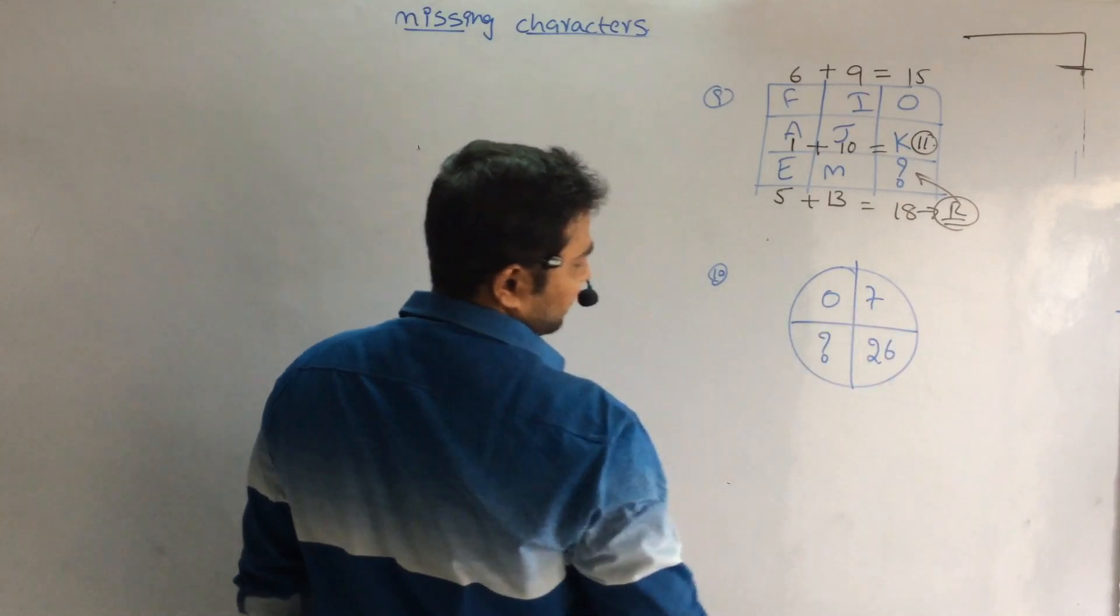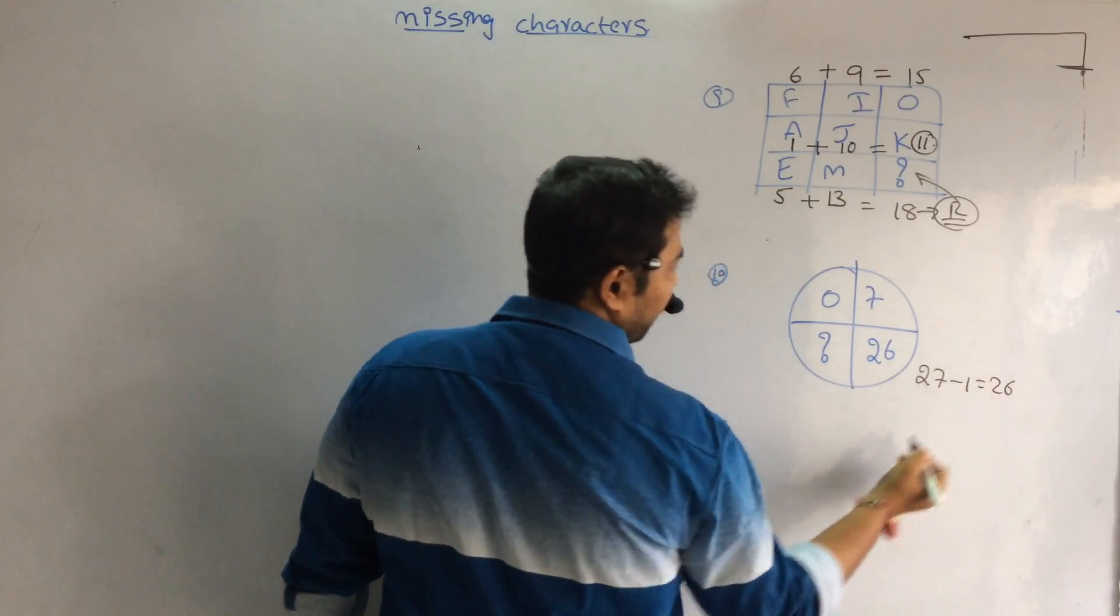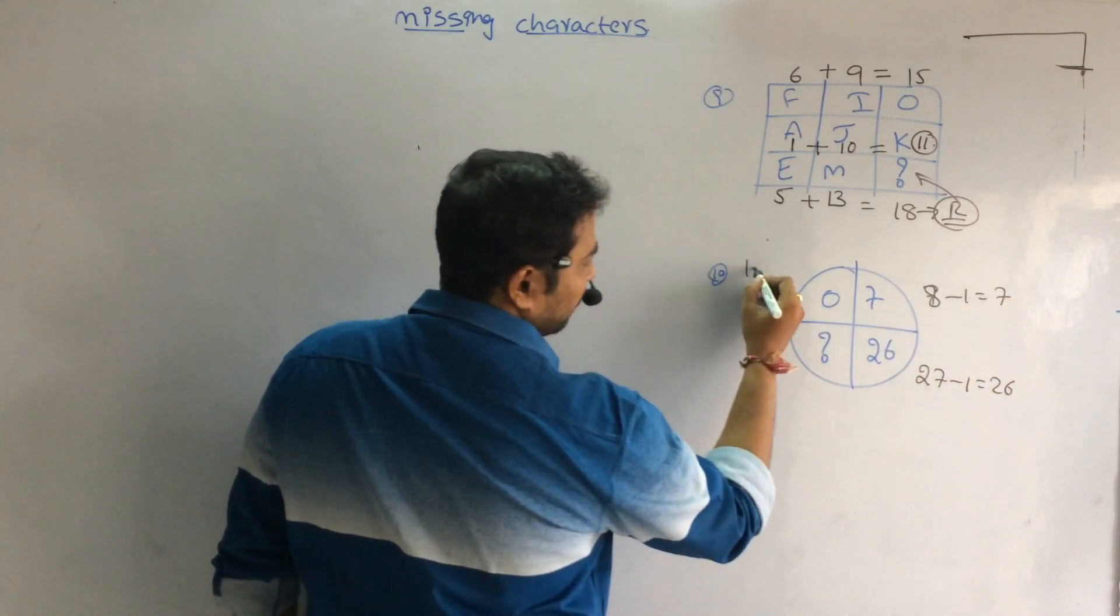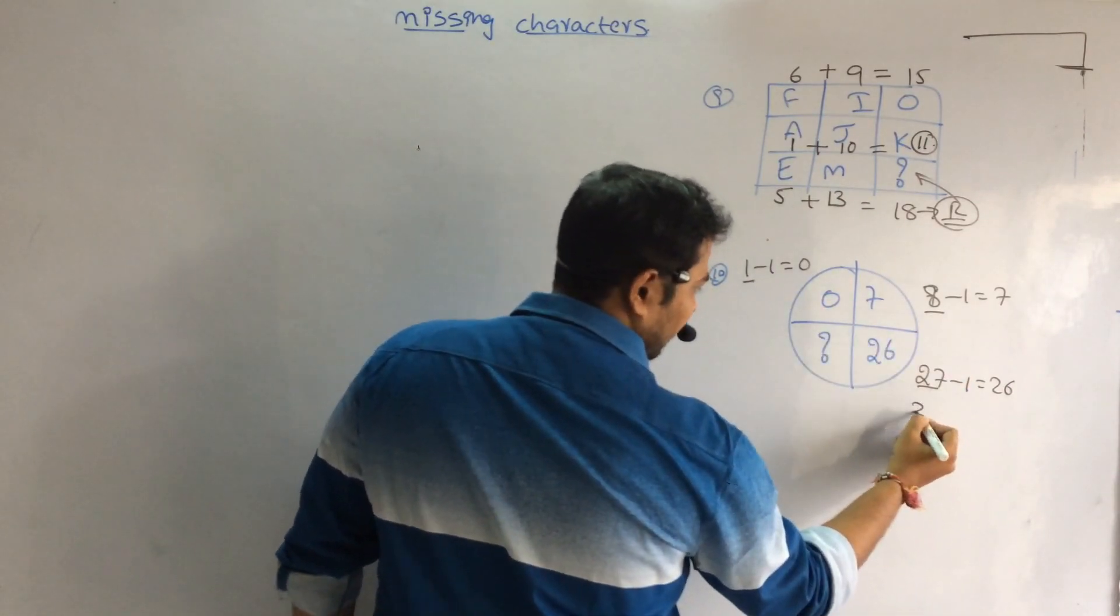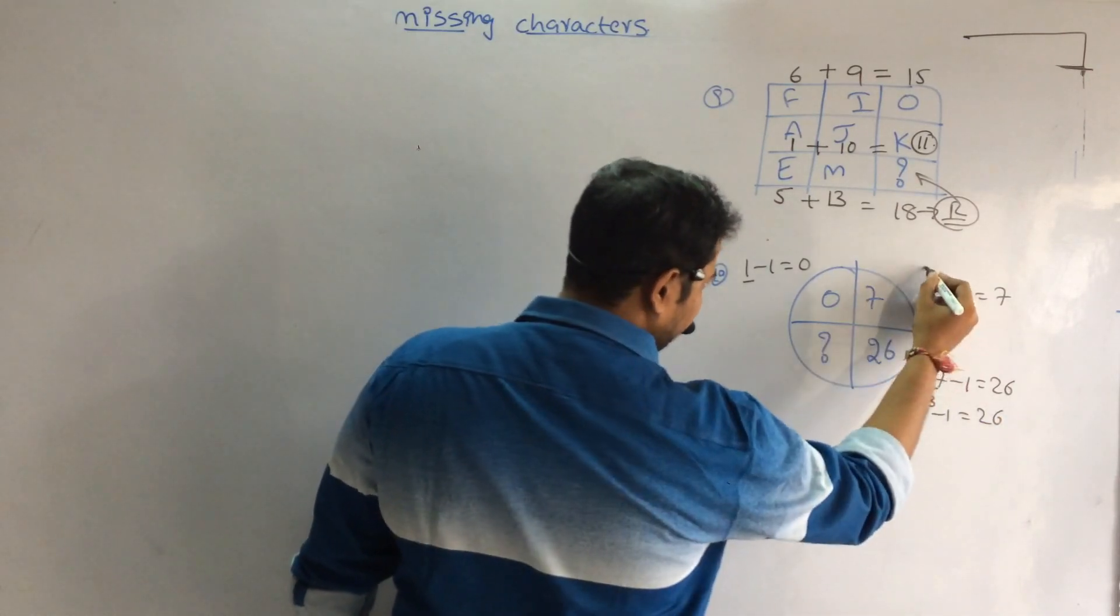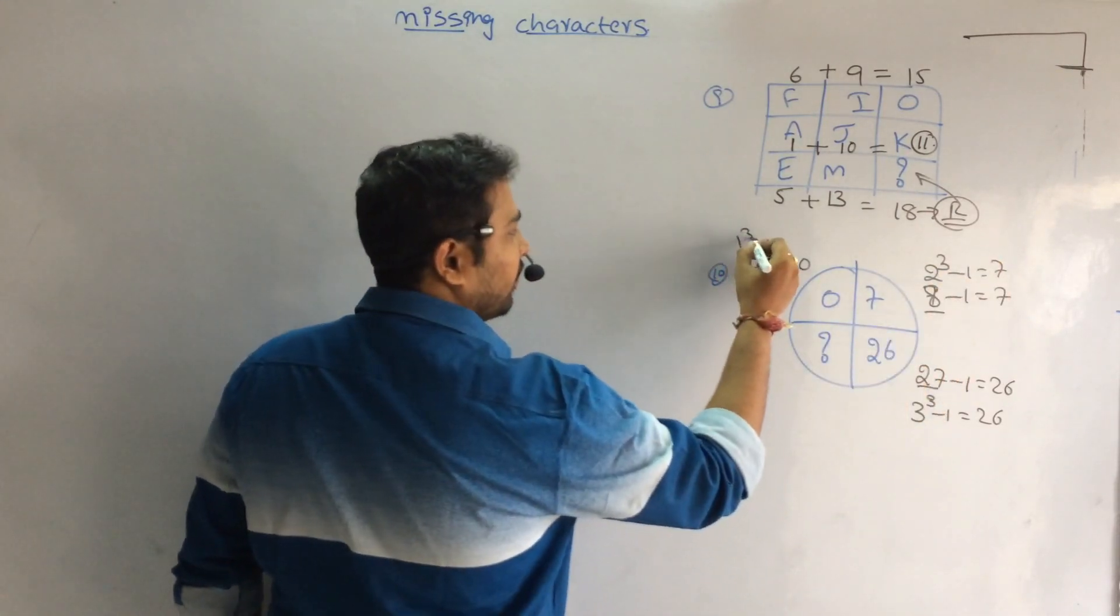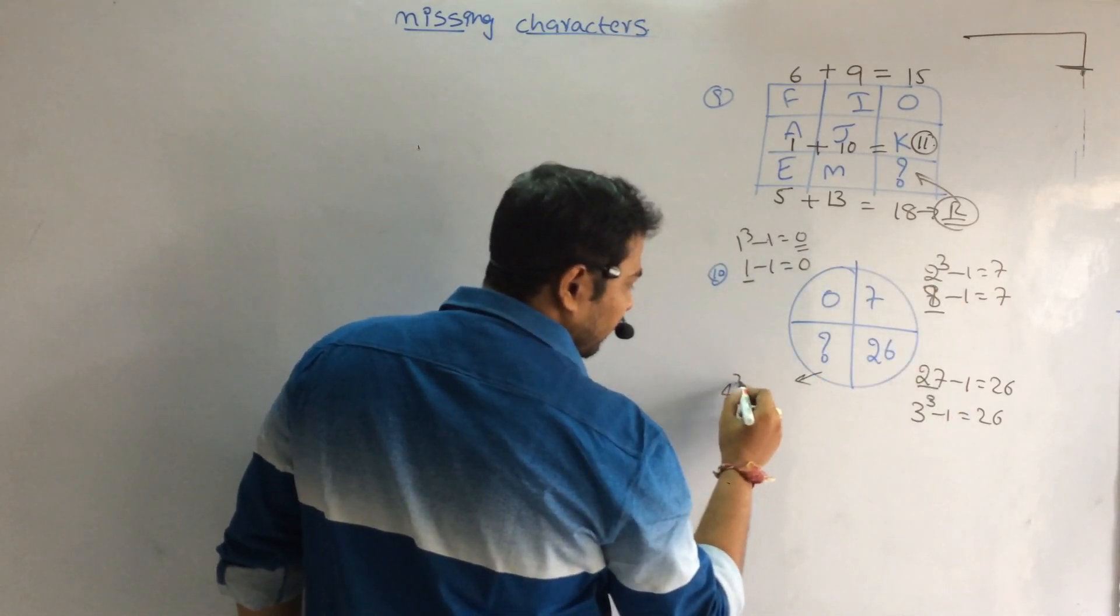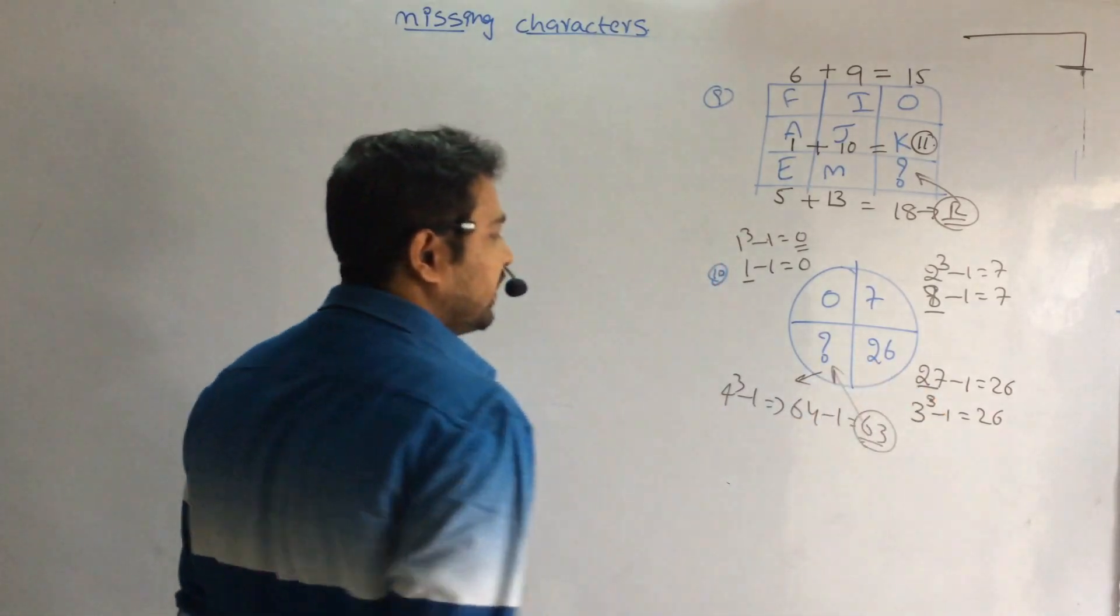Next, what is the question mark? 0, 7, 26. 27 minus 1 is 26, 8 minus 1 is 7, 1 minus 1 equals 0. 27, 8, 1. 3 cube minus 1 is 26. 2 cube minus 1 is 7. 1 cube minus 1 is 0. 1, 2, 3, what's next? 4 cube minus 1. 4 cube is 64 minus 1. The value is 63 is my answer.